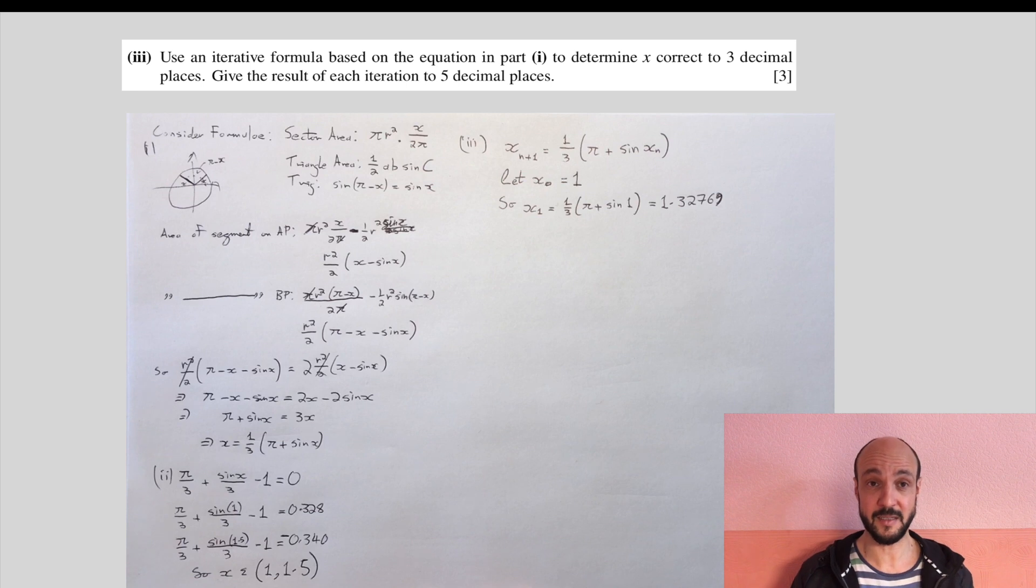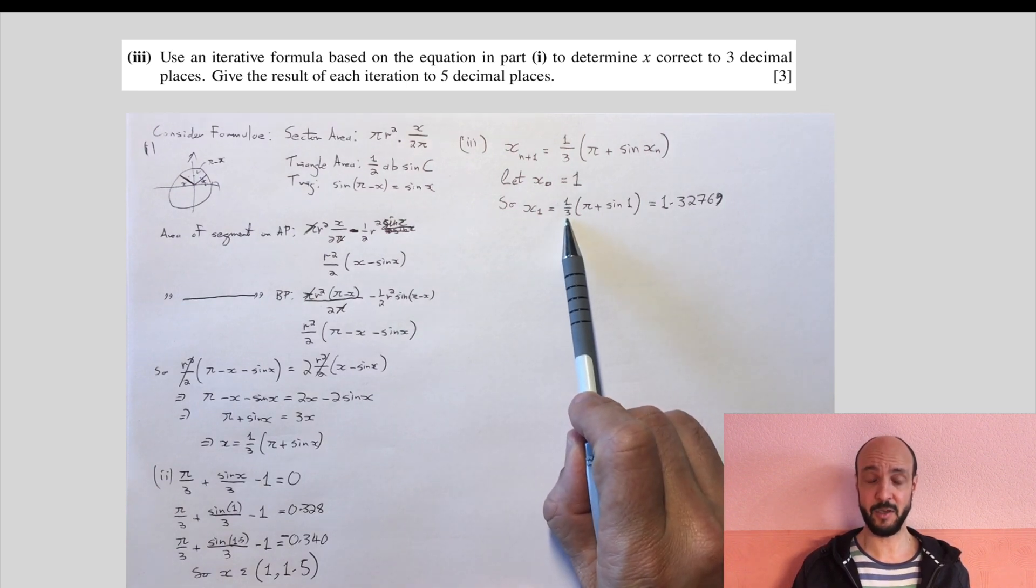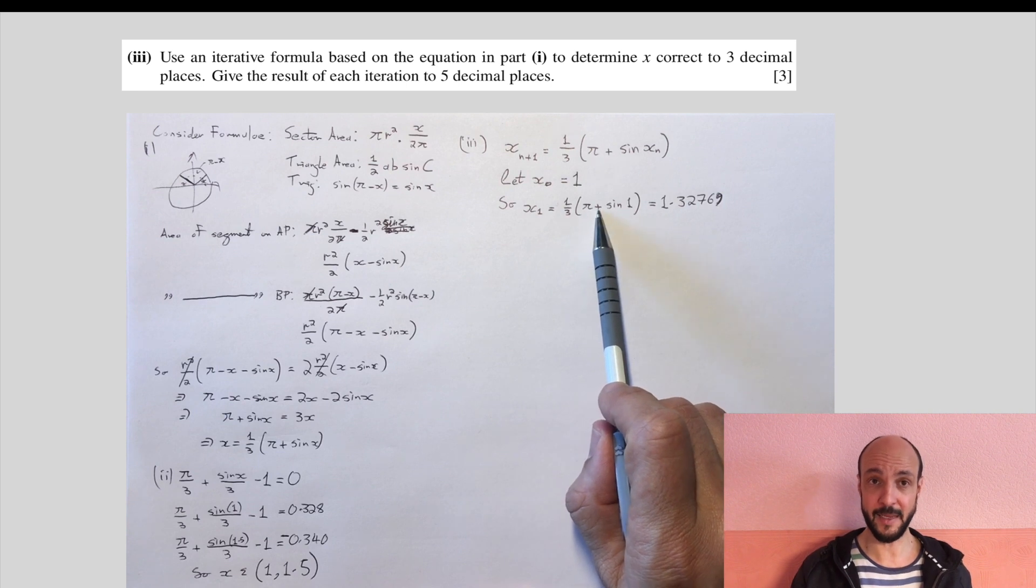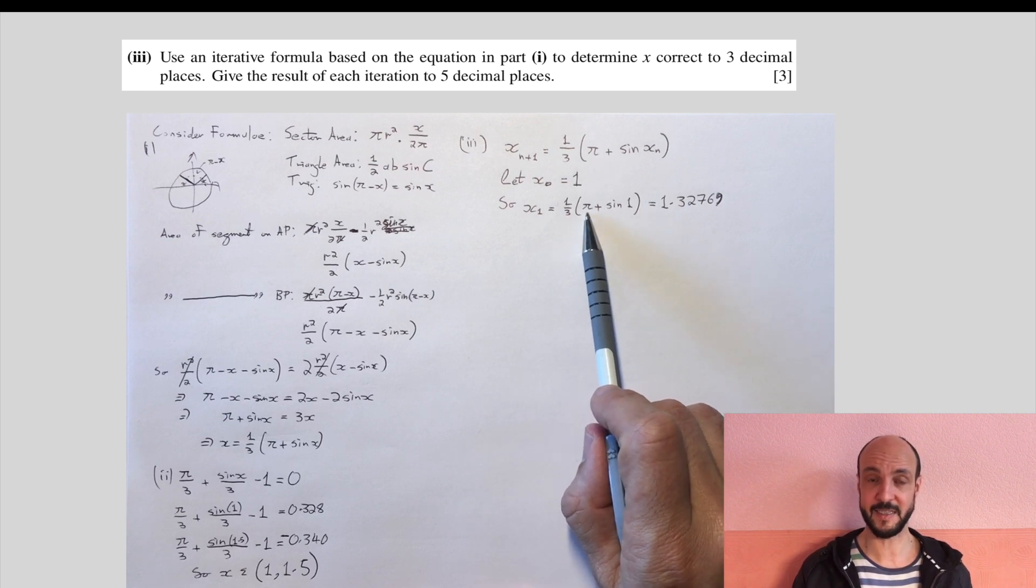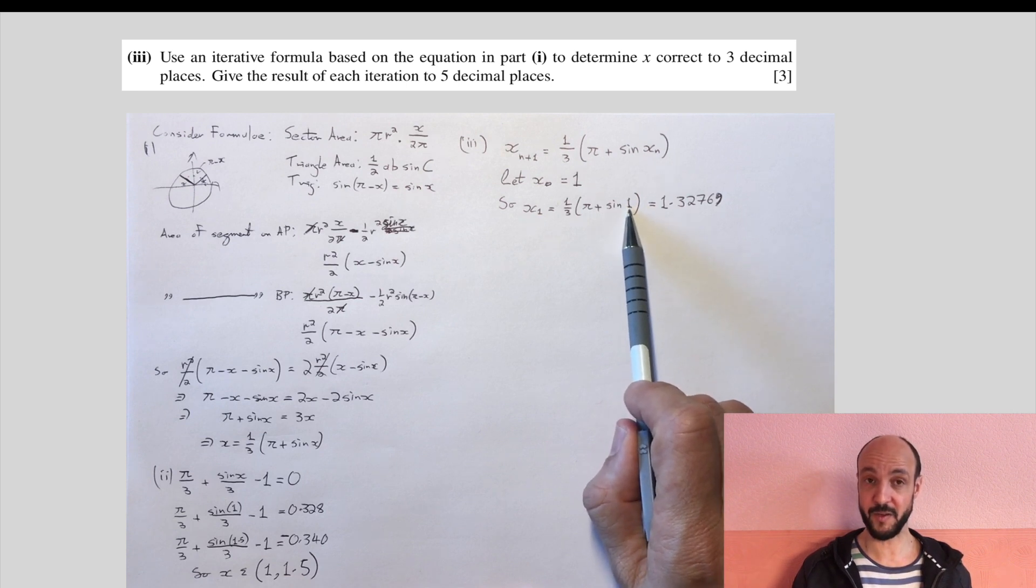So the easiest way to do this, we write it into our calculator and then we use the answer button on the calculator to make sure we don't have to write it again and again. The calculator will do it automatically for us. So I'm going to tell you what we'll write into the calculator first of all. We'll write brackets one divided by three, close brackets, times by open brackets, pi, and you should have a pi button on your calculator, plus sign,